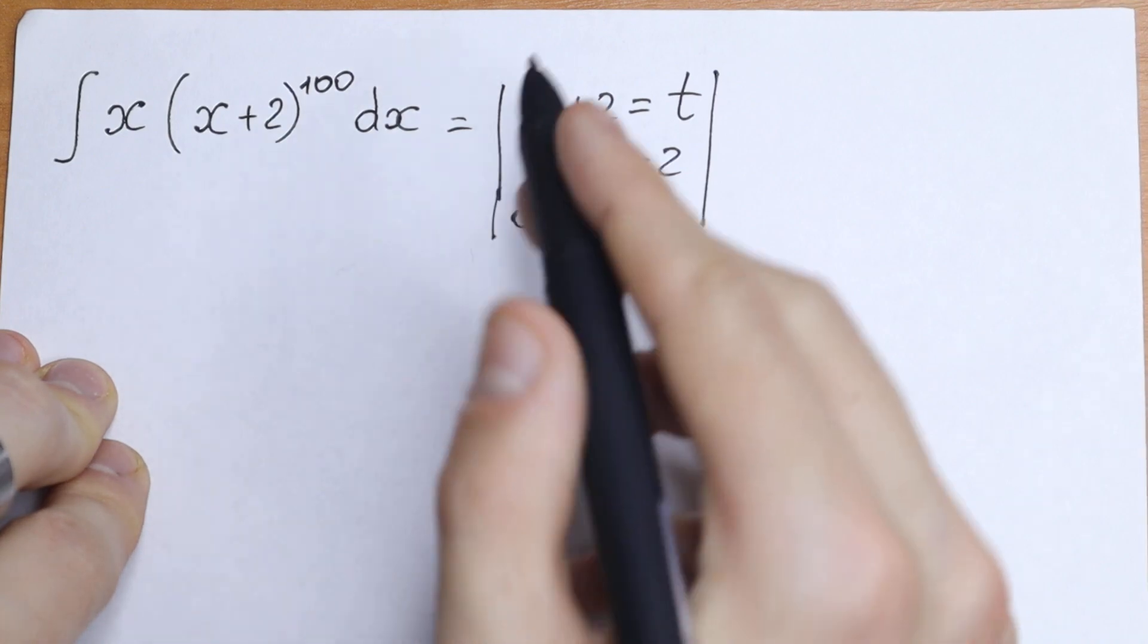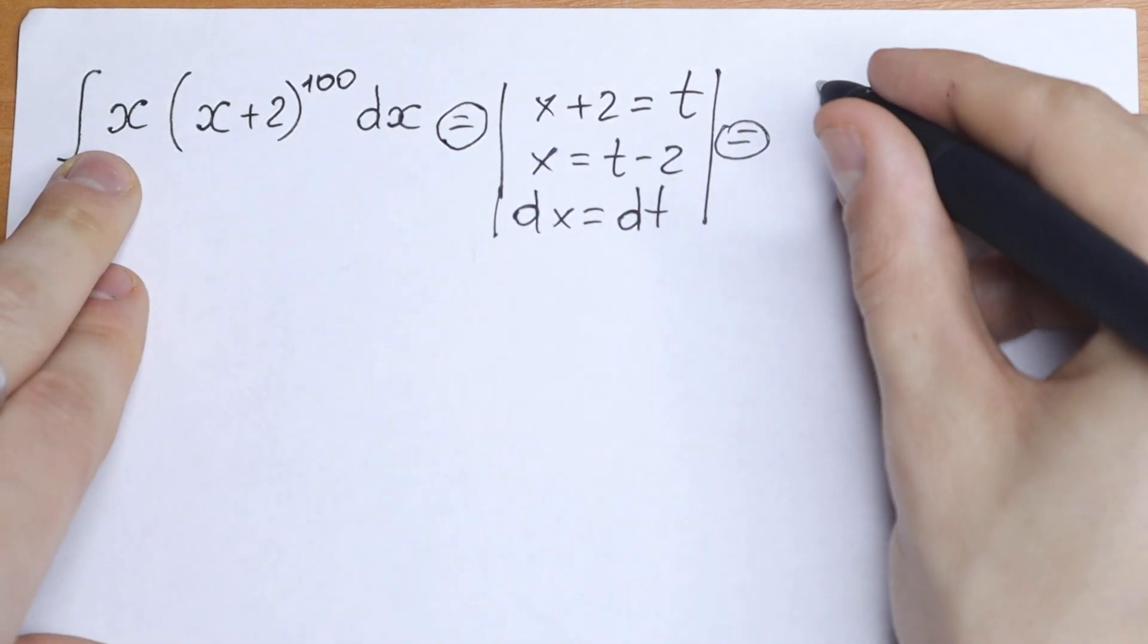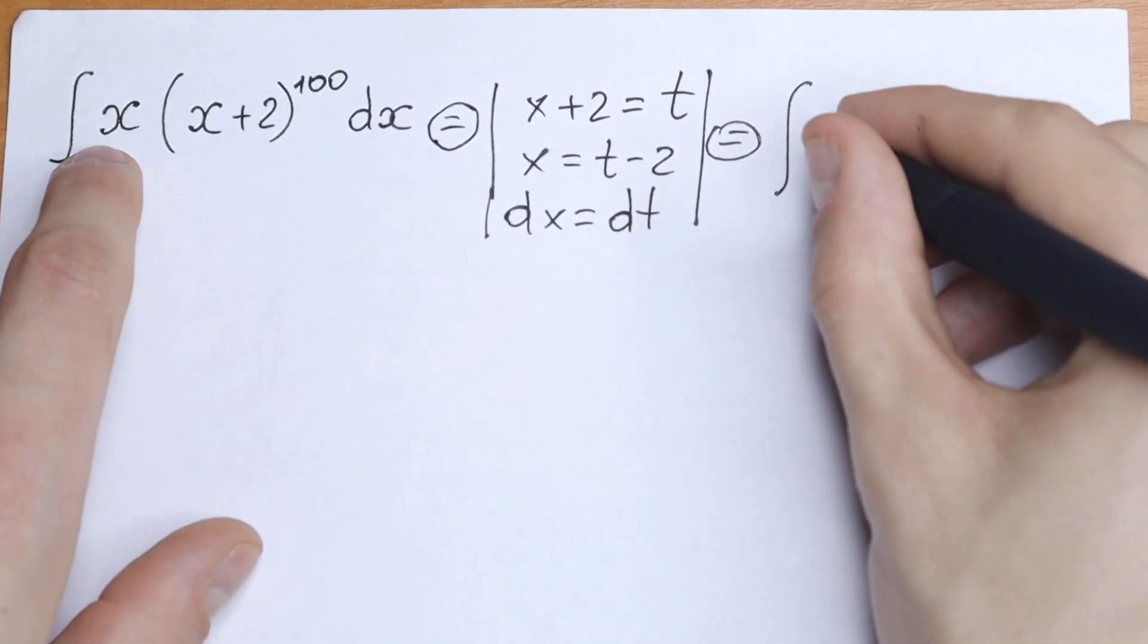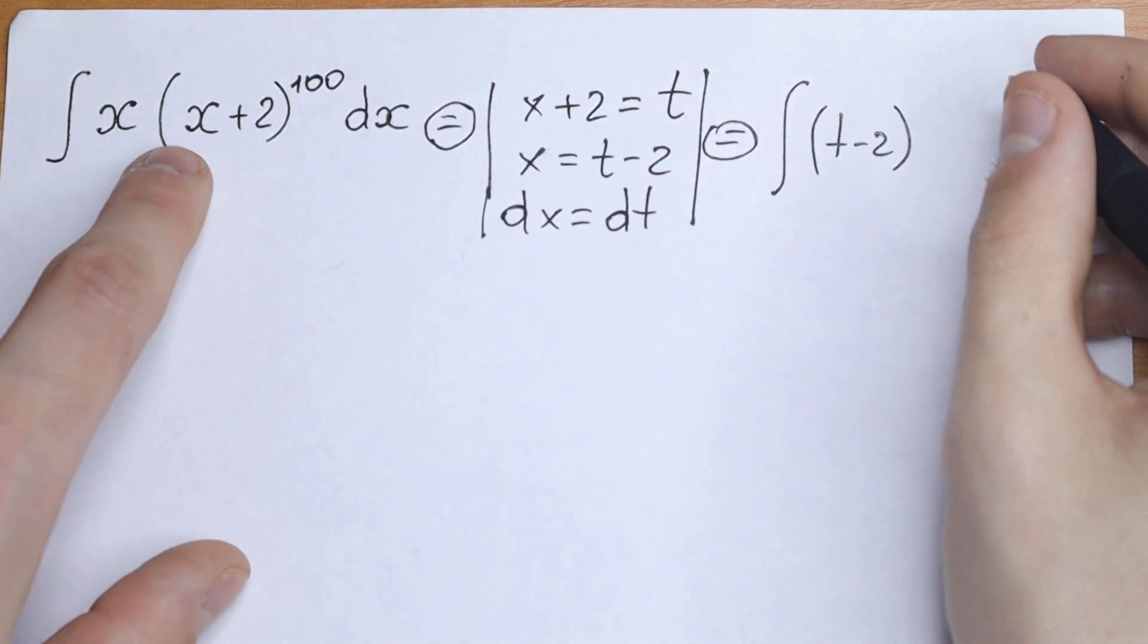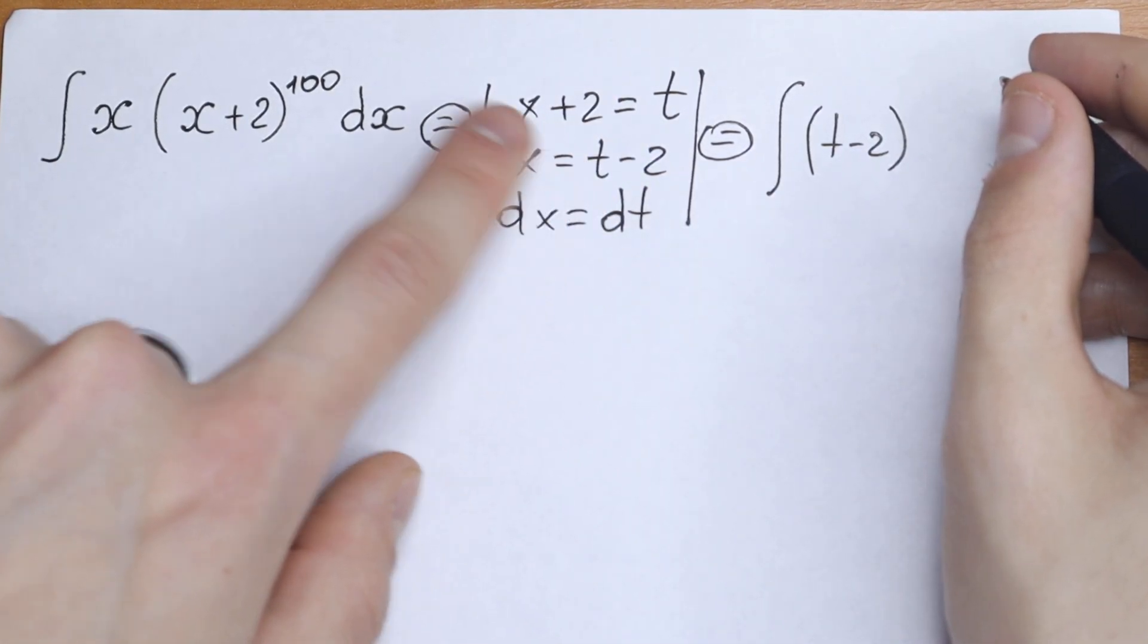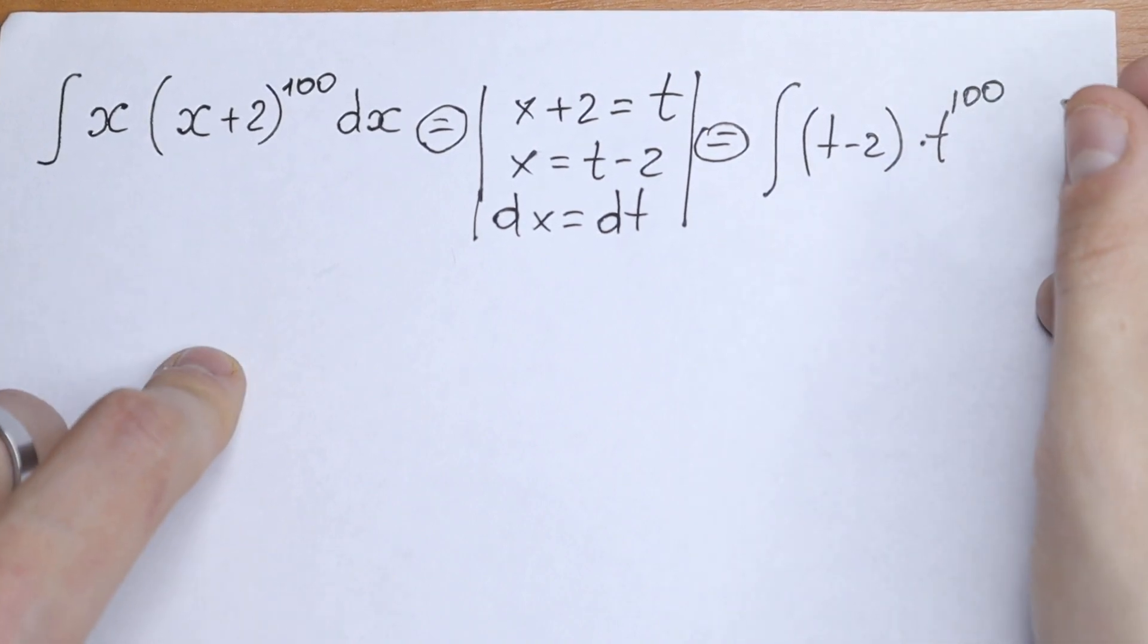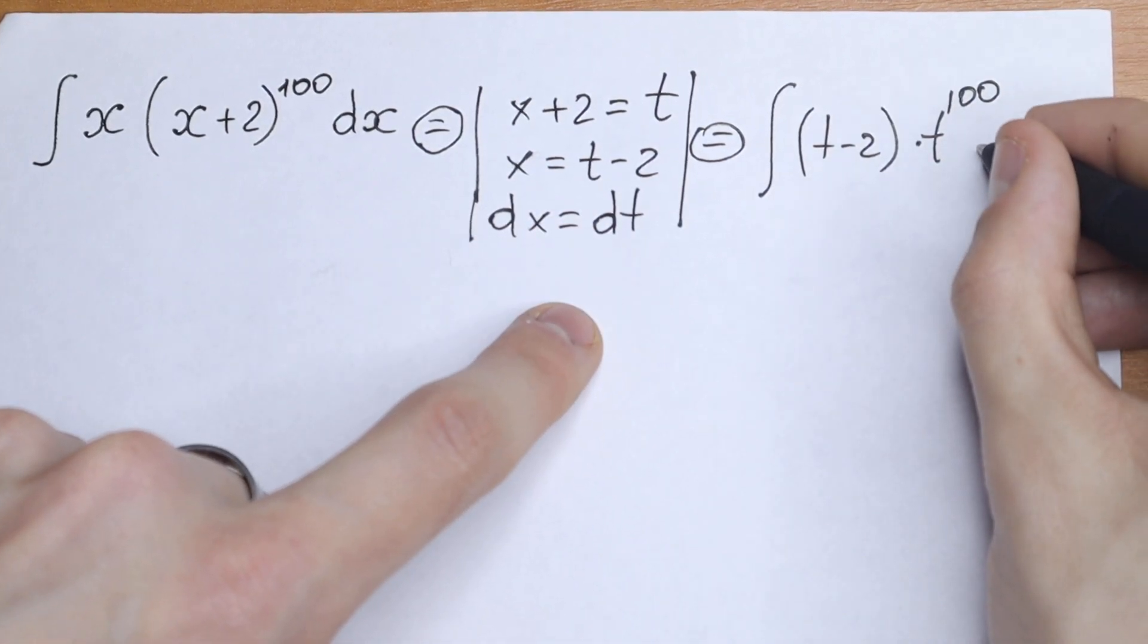So we have all of the elements that we need to change. So let's put all of these elements inside of this integral sign. As a result we will have this integral will be equal to... We know that x equal to t minus 2. So we have t minus 2. Instead of this x plus 2 we will have t to the power 100. And instead of dx we have dt.